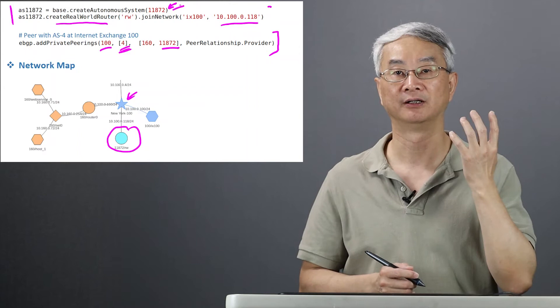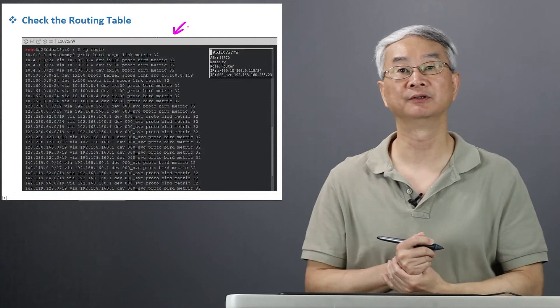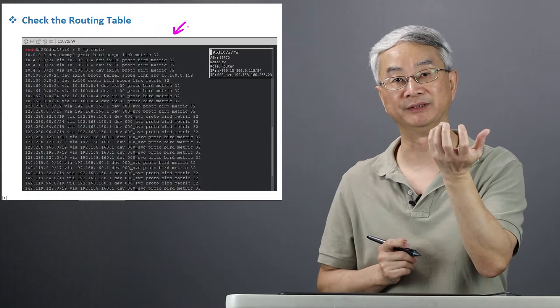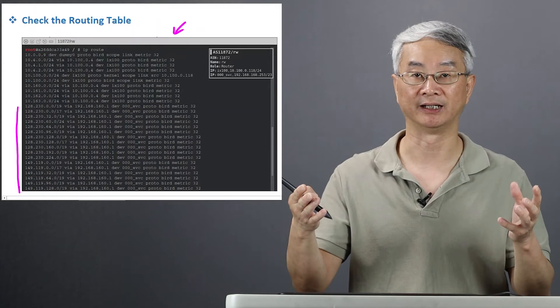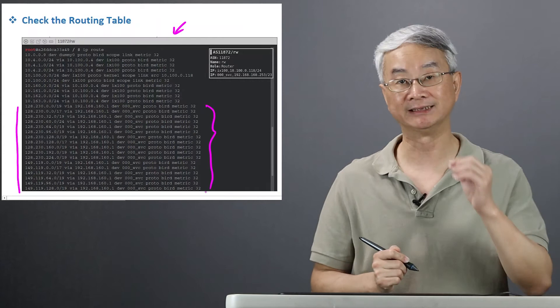If you check the routing table once everything gets started and look at the routing table of that BGP speaker, you're going to find a bunch of these. Syracuse University is not just announcing one IP prefix — it announces many of them. That's very common; if you look at the real world, that's what happens. So we actually collect all of them, put them inside the BGP table, and then that's going to be announced to the emulator.